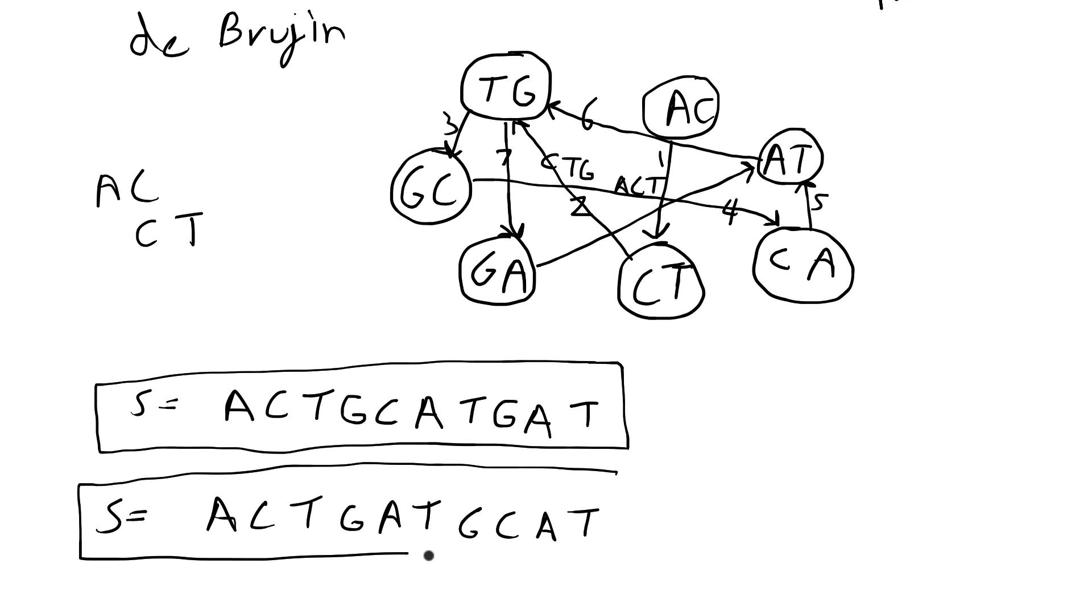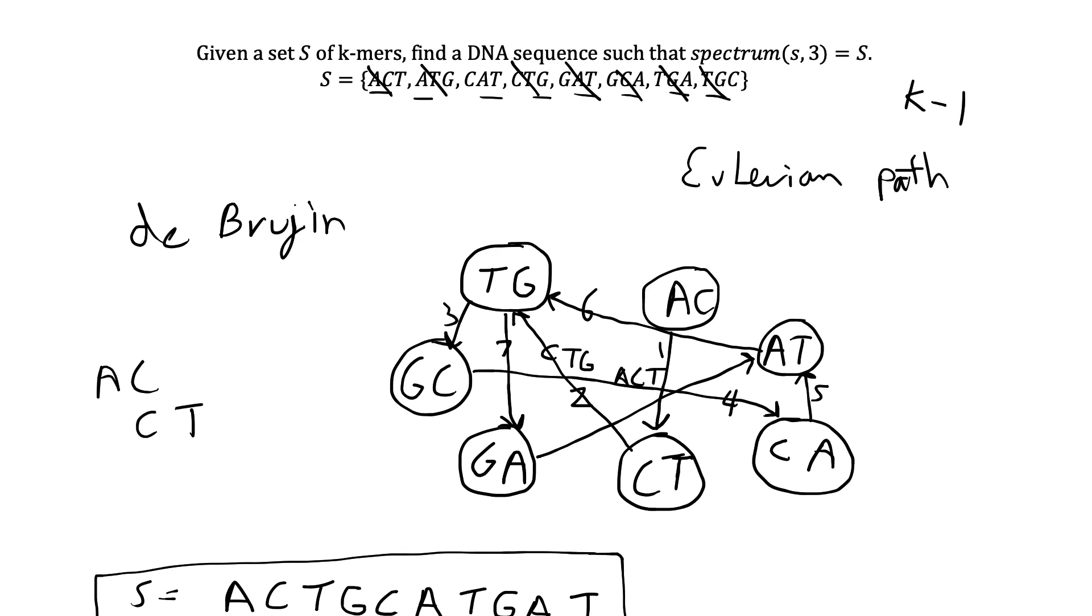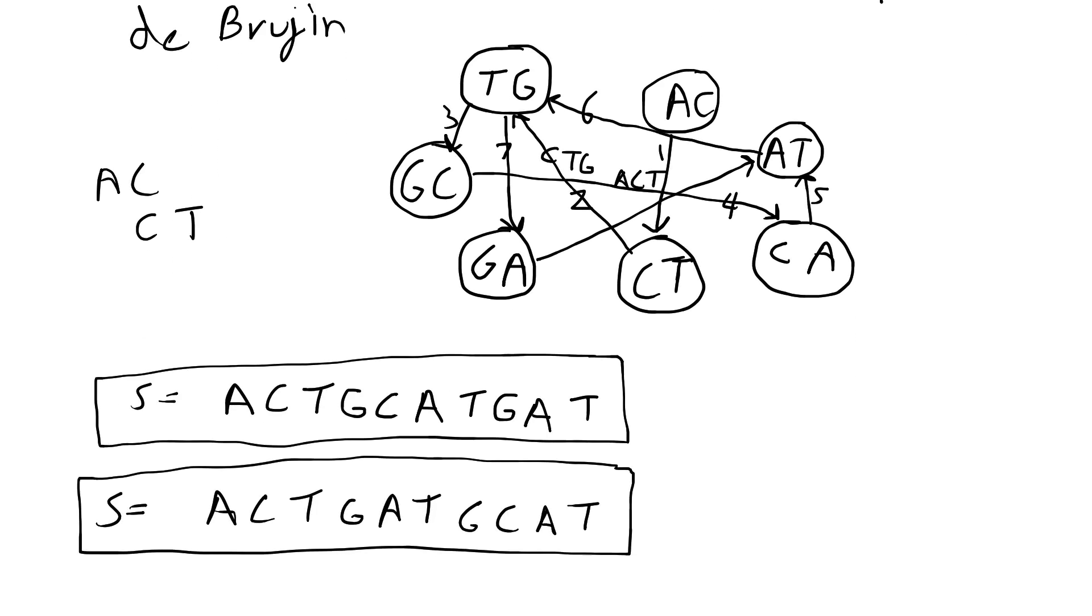And so sometimes there's more than one solution possible using this method, but this is usually avoided by also having additional information about the organism and having longer strands where it's less likely to have overlap between the vertices because you have more nucleotides in the substrings.